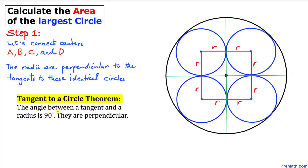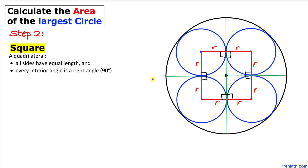We can see that the radii of these identical circles are perpendicular to the tangents. By the tangent-to-a-circle theorem, the angle between a tangent and a radius is always 90 degrees — they are perpendicular. So this radius and this tangent form a 90-degree angle, and likewise for all the others.